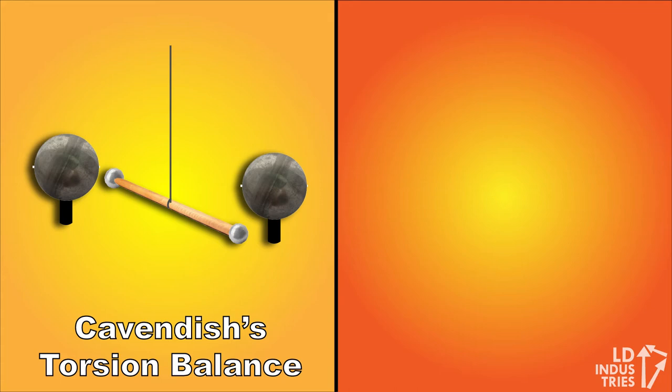All of this mass was needed to produce the force of gravity between the spheres, something big enough to be measurable. Even still, the movement of the hanging spheres was tiny, only about 4 millimeters.